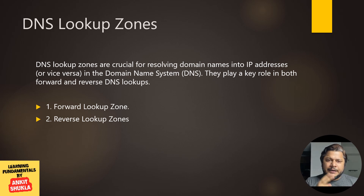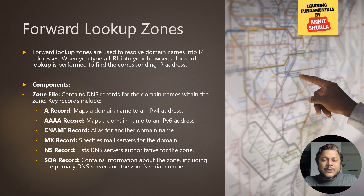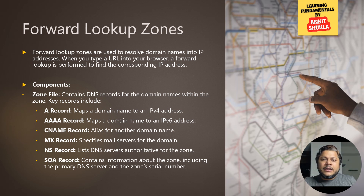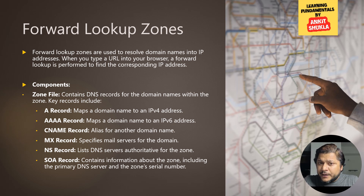There are two types of lookup zones in DNS: forward lookup and reverse lookup. Forward lookup zones are like a library catalog — you find a book's location by its title. In DNS, forward lookup zones translate domain names into IP addresses. When you type google.com into your browser, a forward lookup query is initiated, navigating through DNS servers to find the associated IP address. Components of a forward lookup zone include A records, AAAA records, CNAME records, and MX records.